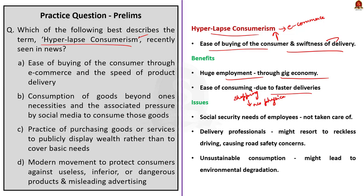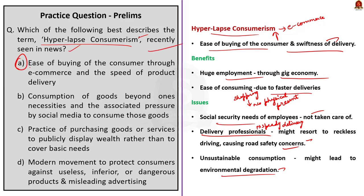Issues associated with hyper-impulse consumerism include: since the gig economy does not work based on employment contracts, the social security needs of employees are not taken care of; with consumer behavior prompting speedy delivery, delivery professionals might resort to reckless driving causing road safety concerns; and prolonged unsustainable consumption might lead to environmental degradation. The question: 'Which of the following best describes the term hyper-impulse consumerism?' The answer is Option A — ease of buying of the consumer through e-commerce and the speed of product delivery.